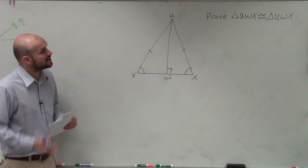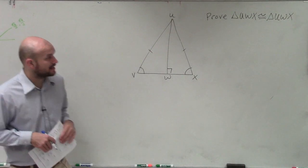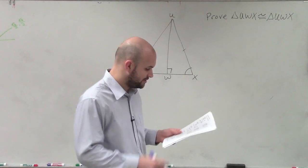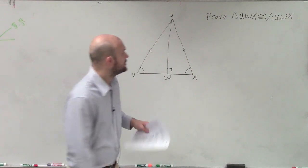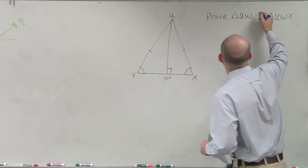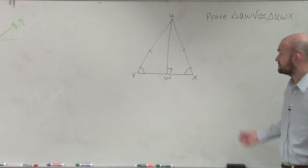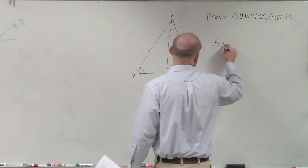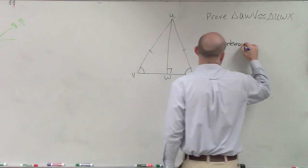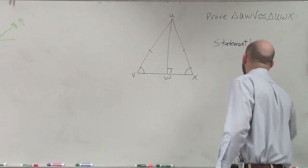Alright, so in this one they're asking us to prove triangle UWX is congruent to triangle UWV. So they give us a lot of givens, right? So if I'm going to prove this, I'm obviously just going to write in all these givens that we have.